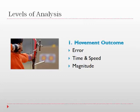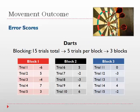First, let's take a look at movement outcome, our first level of analysis. There are three components to movement outcome: error or error scores—inversely, you could think of this as accuracy or lack thereof. We can also evaluate movement outcome in terms of time and speed, as well as magnitude. We'll be looking at each of these individually, first looking at error scores. Error scores are essentially giving us information about the degree to which an individual did not achieve a target.